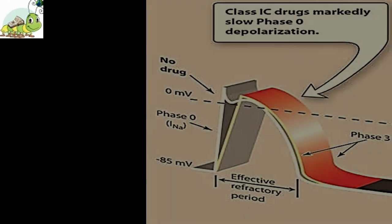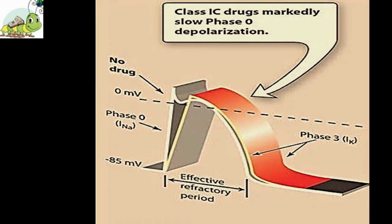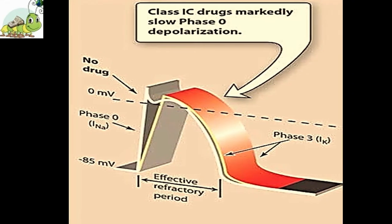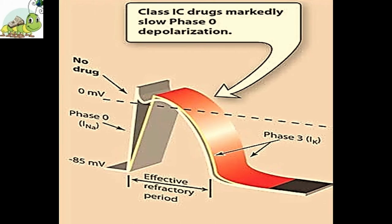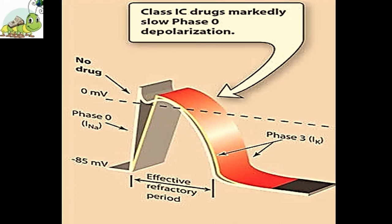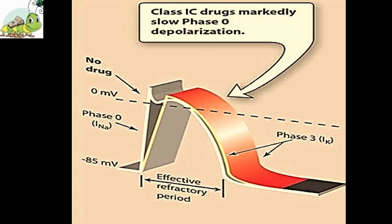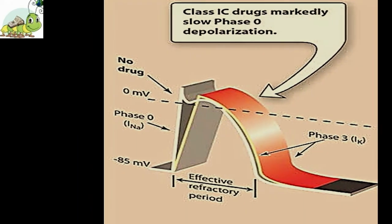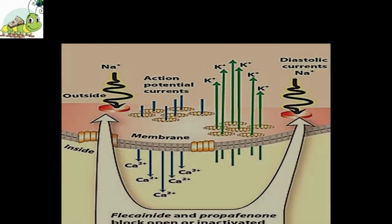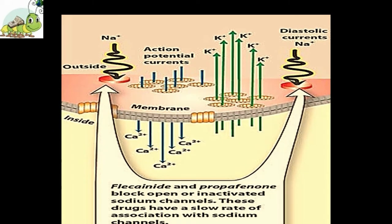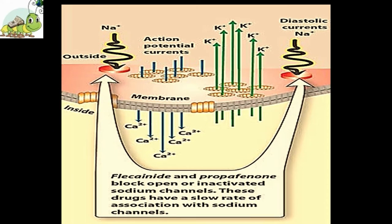Electrophysiological actions: At the sinoatrial node, flecainide decreases the sinus cycle length but results in a clinically insignificant decrease in heart rate. In atrium, flecainide decreases the maximum rate of depolarization in atrial tissue and shifts the membrane responsiveness curve to the right. Flecainide may also cause block in accessory AV connections, which is the principal mechanism for its effectiveness in treating AV re-entrant tachycardia.